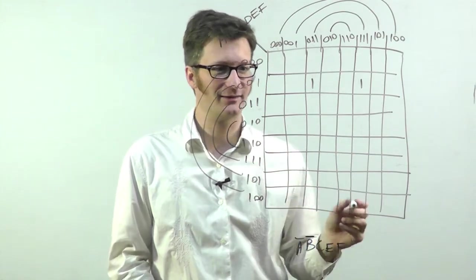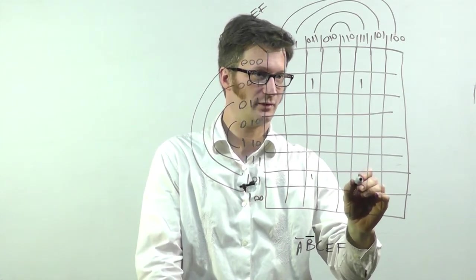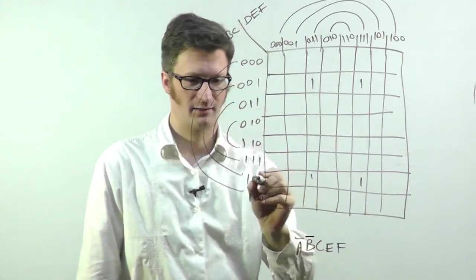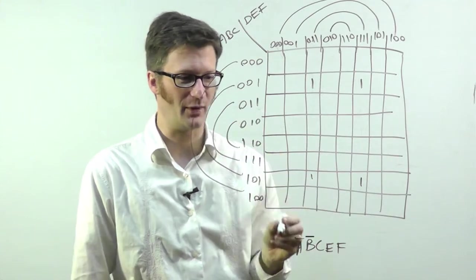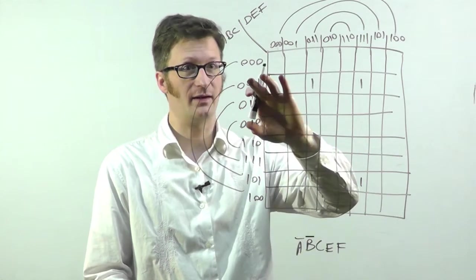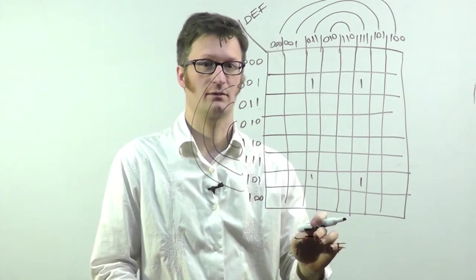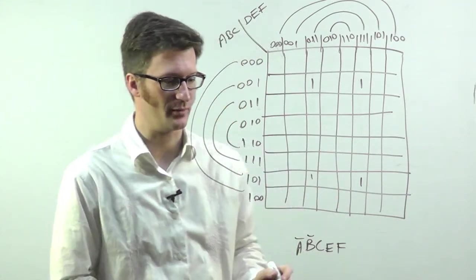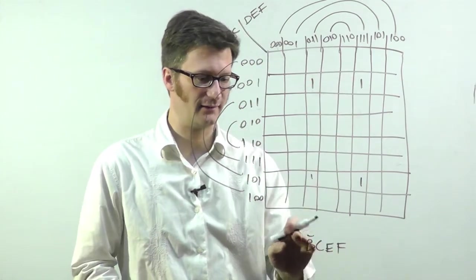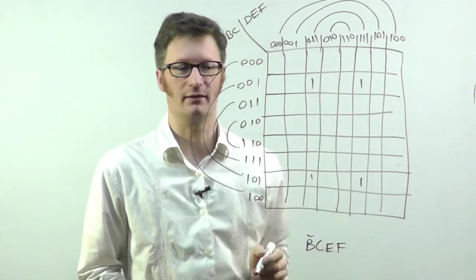And likewise, to get really tricky, if I were to do that, all four of these share this arc of the rainbow. So now I could describe that. What's common to them is B bar, C. That was supposed to be A bar, B bar, C. But now if we've got the four in there, it's B bar, C, E, F would be a minimized way of representing them.